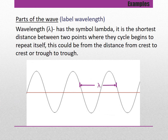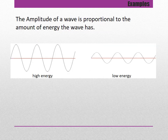Wavelength is symbolized by the Greek symbol lambda. The wavelength is the shortest distance between two points where the cycle begins to repeat itself — measured from crest to crest or from trough to trough. The amplitude of a wave is proportional to the amount of energy the wave has: high energy means large amplitudes, low energy means small amplitudes. There is more energy put into a slinky the wider you swing your arm — higher energy, higher amplitude.